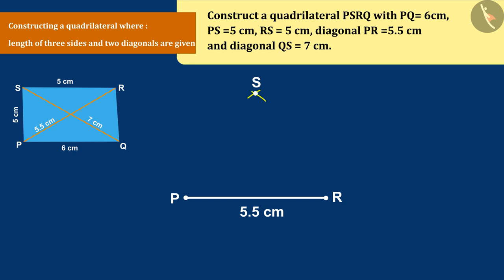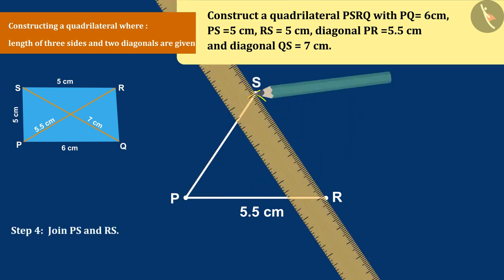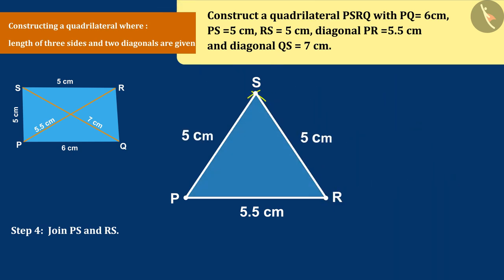Join P, S and RS. In this way, we have constructed the triangle PRS.